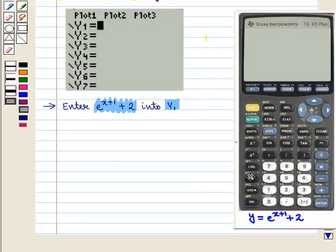e raised to the power x is written above natural log key. So we press 2nd key followed by ln key and then x θ T key for x. Then plus sign key,